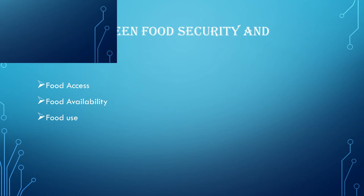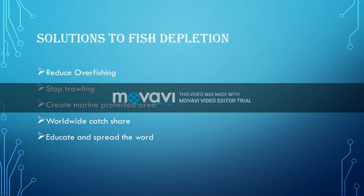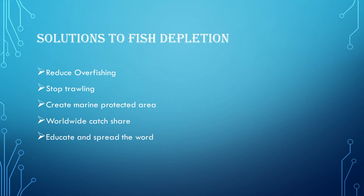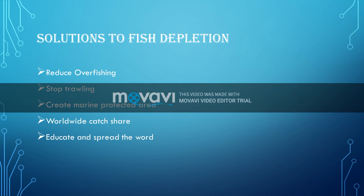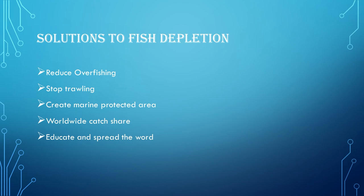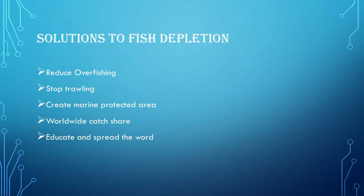The solutions to fish depletion can all work if they are applied at the same time and worldwide. Educating all fishermen — who can then pass the knowledge to other individuals — and urging them to stop or limit overfishing is essential. If we work together, we can make a difference. I hope you enjoyed the presentation — thank you very much.